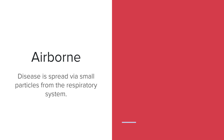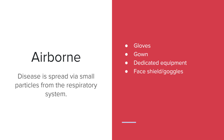For airborne precautions, PPE is the same as before — gloves, gown, dedicated equipment, face shield, and goggles — but rather than a surgical mask, the nurse should be wearing a fit-tested N95 or other respirator. The door should also be closed and, if possible, the room should be negative pressure. If negative pressure is available, the air should be circulated about 12 times per hour.